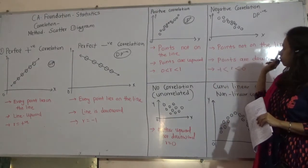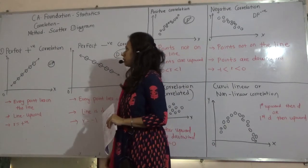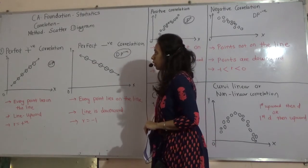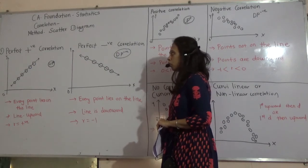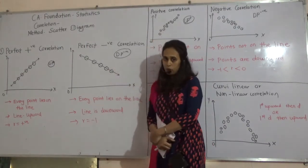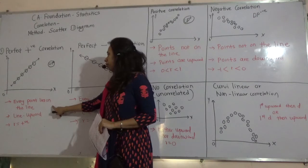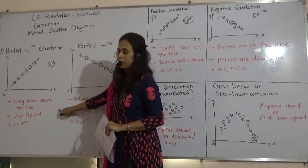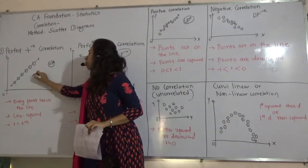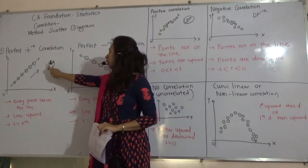See, total we have six type of correlation. On the basis of diagram, you can see what we can call it as. Now, let's see the first one. That is called Perfect Positive Correlation. Now, the question may ask, Perfect Positive Correlation is upward direction or downward direction? You have to remember that it is upward direction.